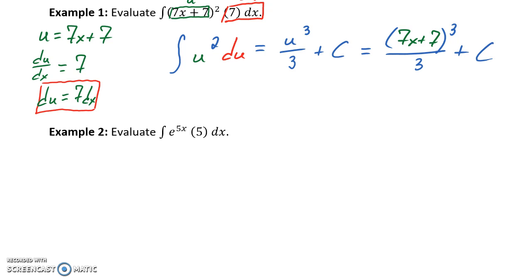So we can take a look at another example here. Our process will start off the same, we'll identify the interior function, which in this case would be that 5x, so we'll let that equal u. We'll take the derivative of both sides, which in this case will give us 5, so we'll get du equals 5dx when we multiply that dx term to the other side.